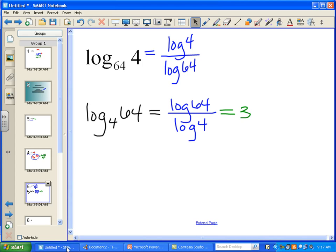Well, look at this fraction. Log 64 over log 4 looks a lot like this one. In fact, it's the reciprocal of this fraction. So, if log 64 over log 4 is 3, then it must mean that log 4 over log 64 is 1 over 3.